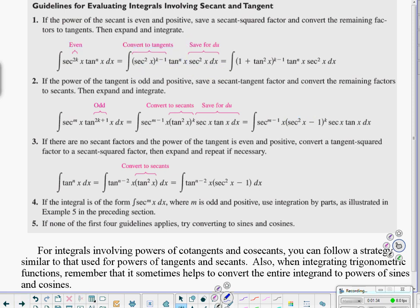If I have the power of tangent being odd and positive, then what I want to do is slice off one of these tangents, which will result in an even number for my tan, and then pull that odd one over with a secant. Because we know that the derivative of secant is secant tan, and that's what I'm using for my du substitution.